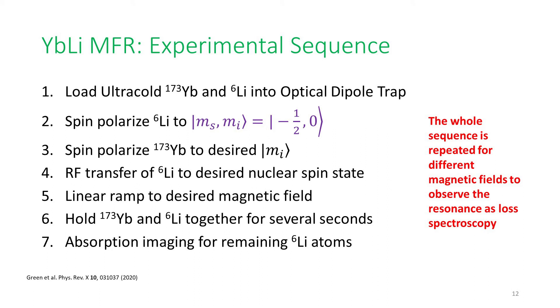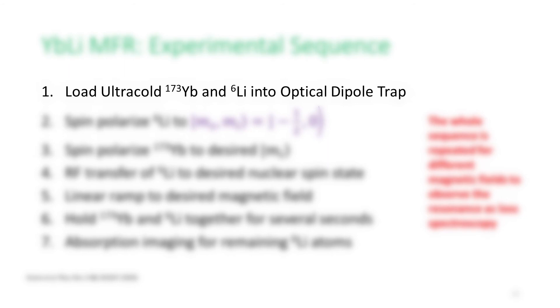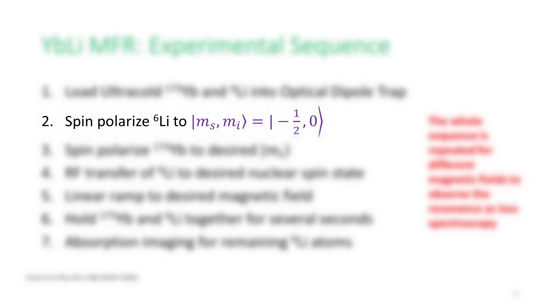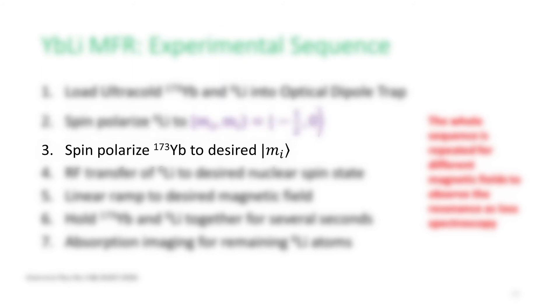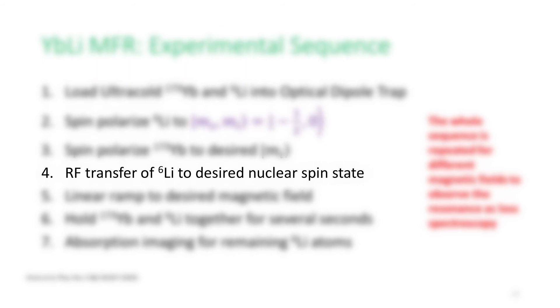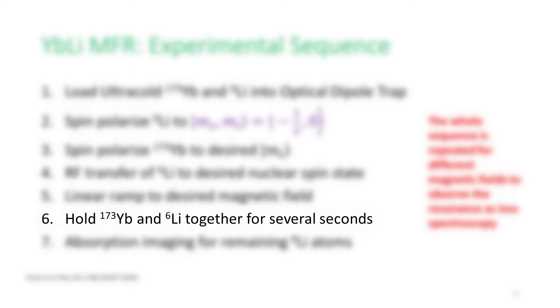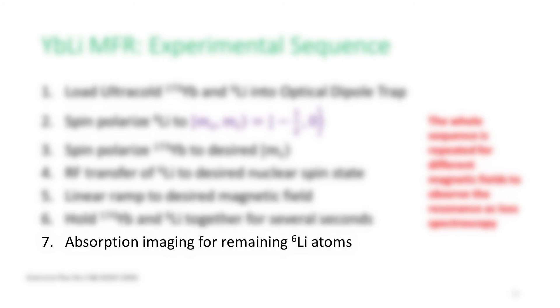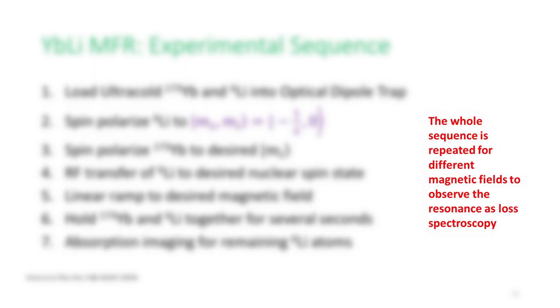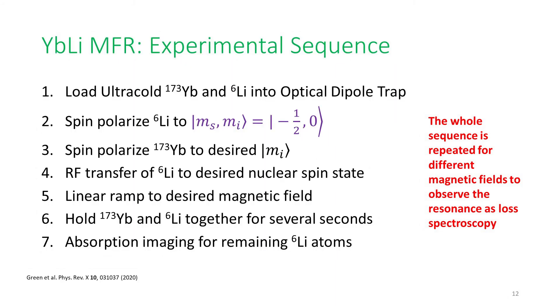Before digging into our experimental data, I want to briefly explain our experimental sequence. For the ytterbium-lithium MFR experiment, we load ultracold 173 ytterbium and 6-lithium into our optical dipole trap. Spin polarize 6-lithium to state 2 with ms equals minus one-half and mi equals zero. Spin polarize 173 ytterbium to the desired mi state. Perform a radio frequency transfer of 6-lithium to desired nuclear spin state. Perform a linear ramp to desired external homogeneous magnetic field. Hold ytterbium and lithium atoms together for several seconds for interactions. And finally, perform absorption imaging on the remaining 6-lithium atoms. This whole sequence is repeated for different magnetic fields to observe the resonance as a loss spectroscopy of 6-lithium atoms.